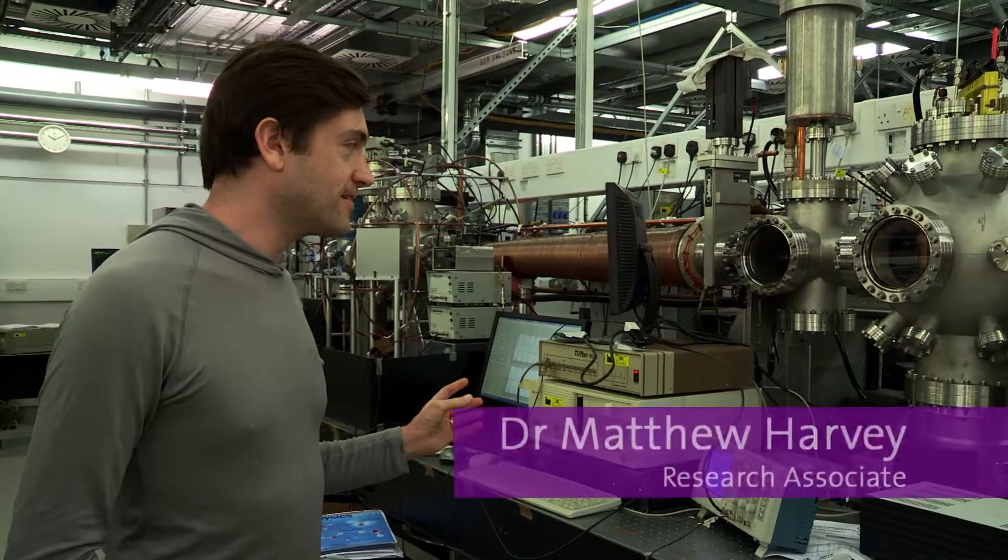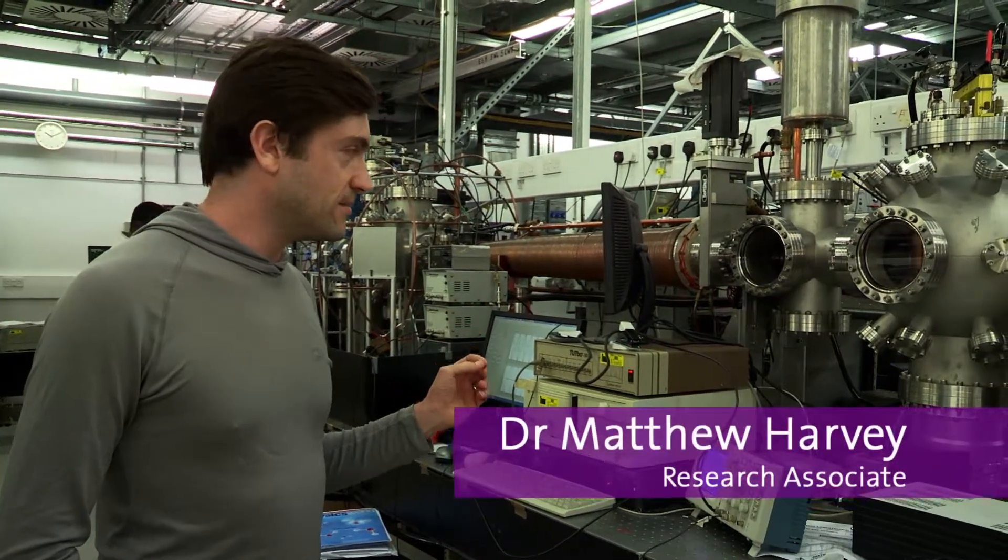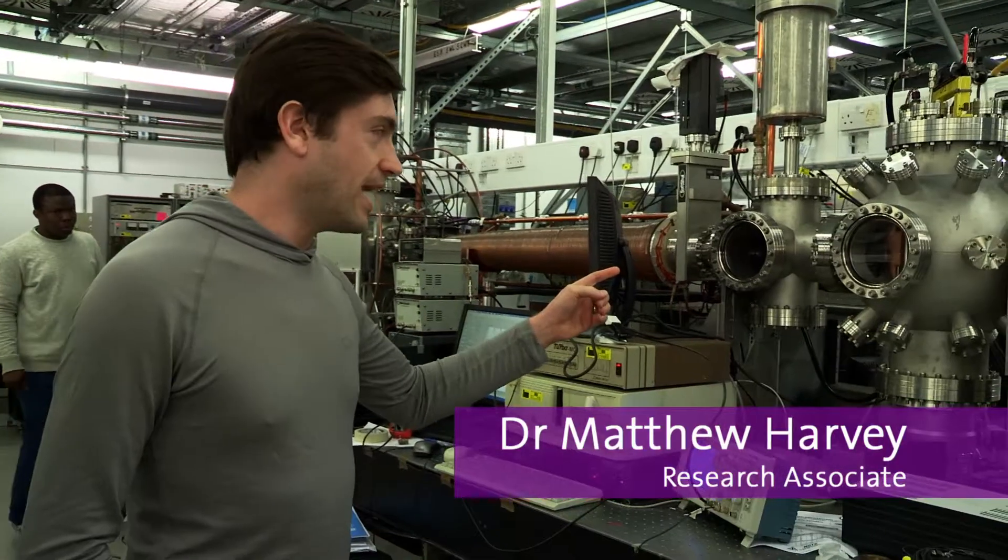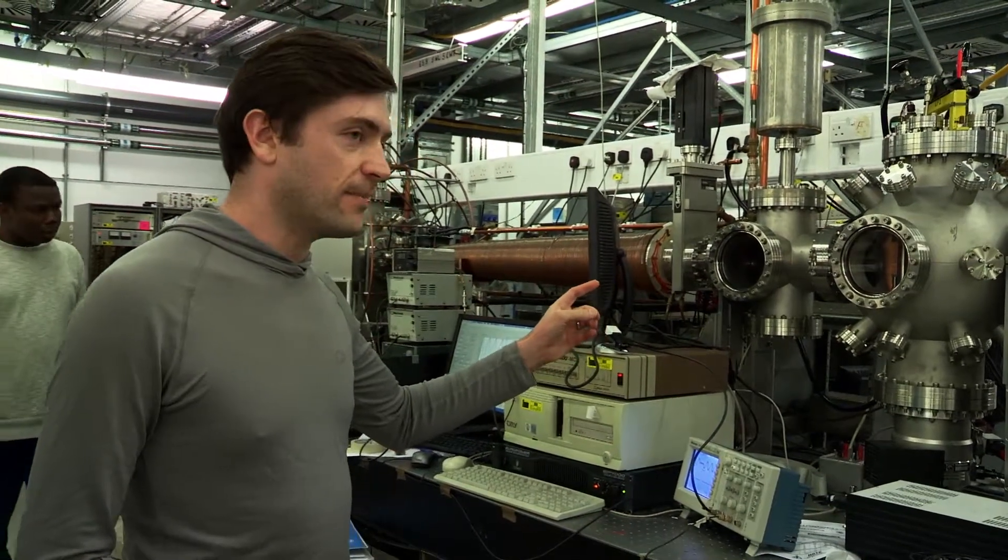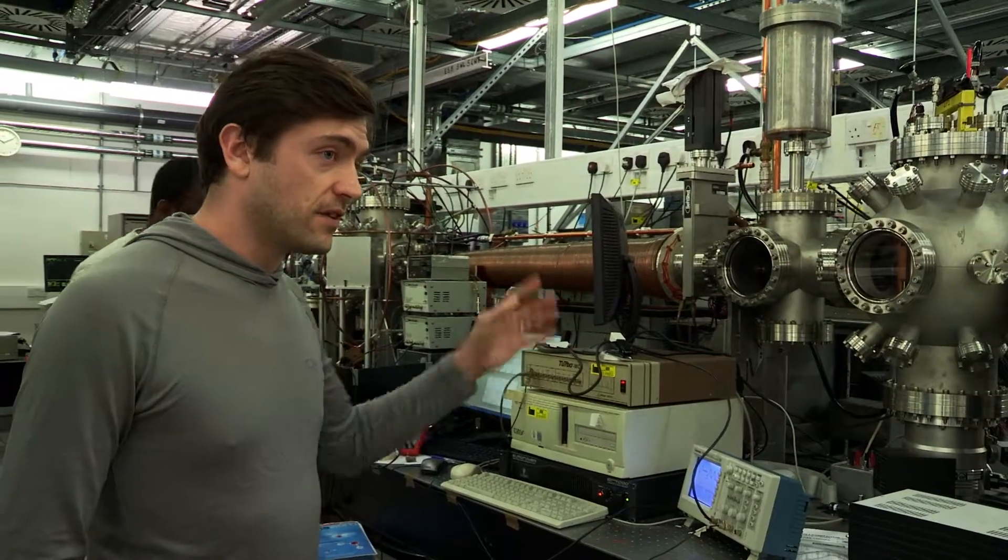This is our atom trapping experiment. We use potassium atoms. In this first chamber we have an oven that produces atomic vapor. Those atoms come out of a large velocity spread.